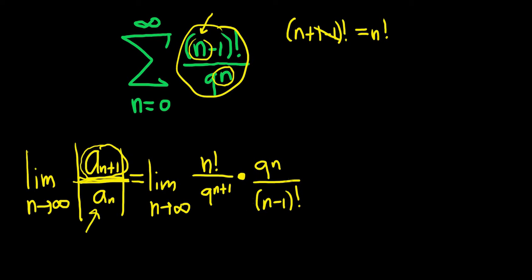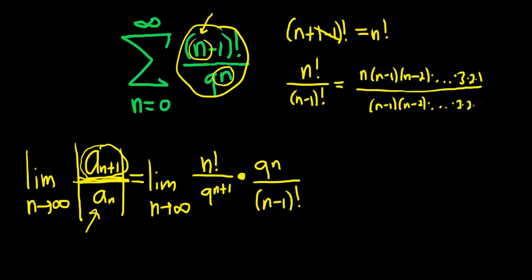There's some simplification that goes on here. So first we have n! over (n-1)!. n factorial is really n times (n-1) times (n-2) times dot dot dot times 3 times 2 times 1. And (n-1)! is (n-1) times (n-2) times dot dot dot times 3 times 2 times 1. So all of that cancels and you're just left with n.